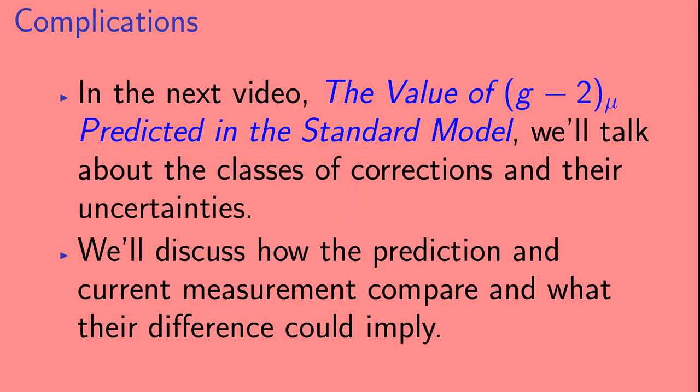In the next video, the value of G minus 2 of the muon predicted in the standard model, we'll talk about the classes of corrections and their uncertainties. And, then, we'll discuss how the prediction and current measurement compare and what their difference could imply.